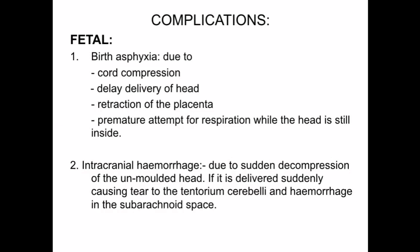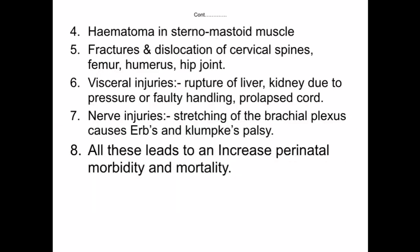Complications of breech presentation are of two types — fetal and maternal. Fetal complications include: birth asphyxia due to cord compression, delayed delivery of the head, retraction of the placenta, premature attempts at aspiration while the head is still inside, and intracranial hemorrhage due to sudden decompression of the unmolded head causing tears to the tentorium cerebri and subarachnoid hemorrhage. Also hematoma in the sternomastoid muscle, fractures and dislocations of the cervical spine, femur, humerus, and hip joints, visceral injuries including rupture of the liver and kidneys, prolapsed cord, and nerve injuries — stretching of the brachial plexus causing Erb's and Klumpke's palsy — all leading to increased perinatal morbidity and mortality.